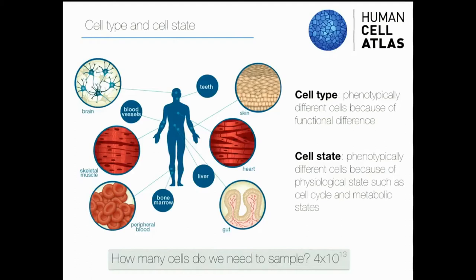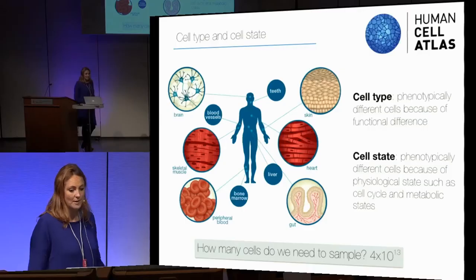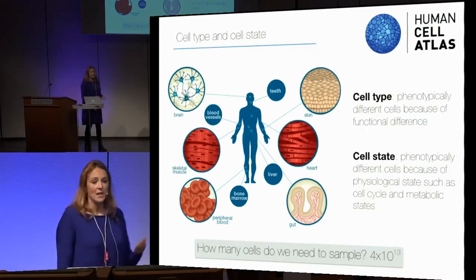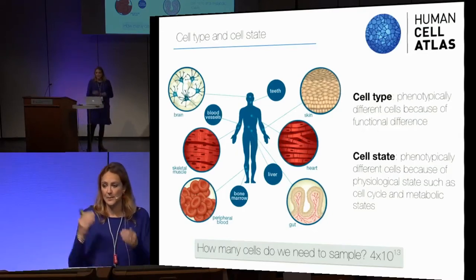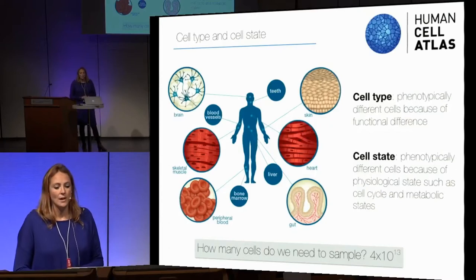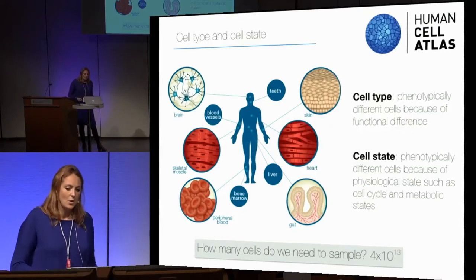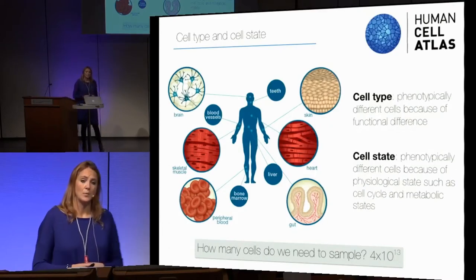To start, and to combine with some of the other discussion we had this morning, I want to give a definition of what for me is a cell type or a cell state. For me, a cell type is something that is very phenotypically different — something that looks different. A neuron looks very different than an epithelium from the skin, the gut, or different immune cells.